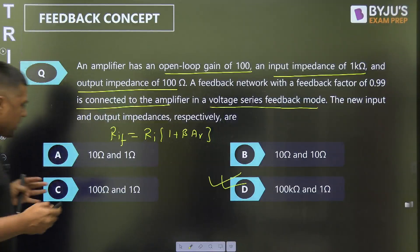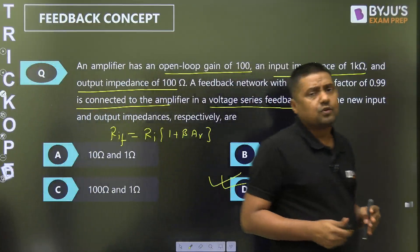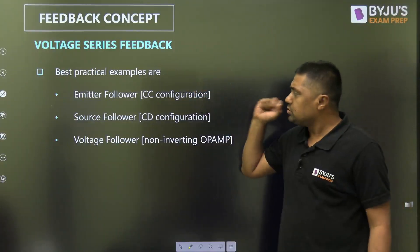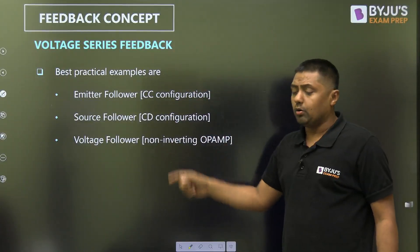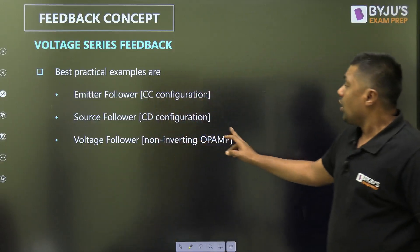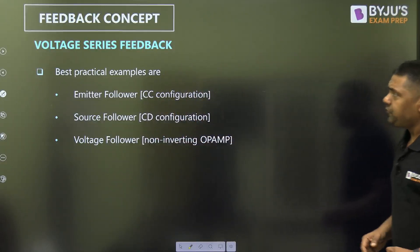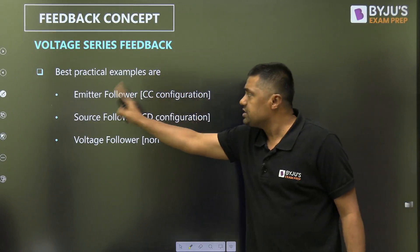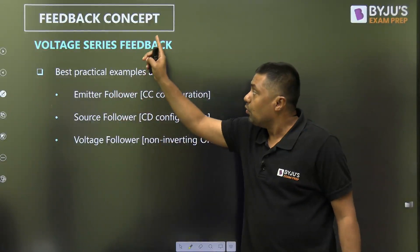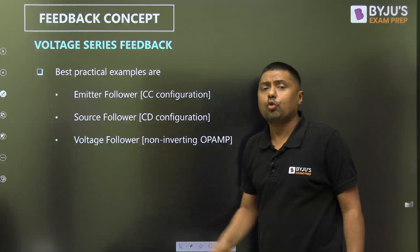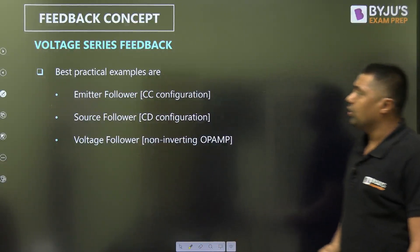The best practical examples of voltage series feedback are: emitter follower, source follower, voltage follower, and the non-inverting operational amplifier. In the next class, I will show how we can identify voltage series feedback in the case of emitter follower, source follower, and voltage follower.